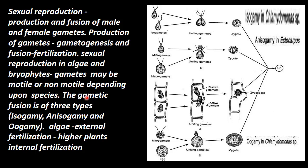Gamete fusion is of three types: isogamy, anisogamy, and oogamy.